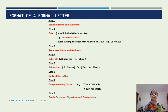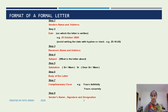Now let us understand the format of writing a formal letter. We start the formal letter by writing the sender's name and address. This has to be written on the left top hand corner of the sheet. Refrain from using any punctuation marks. Then after leaving a line, the date on which the letter is written has to be mentioned.